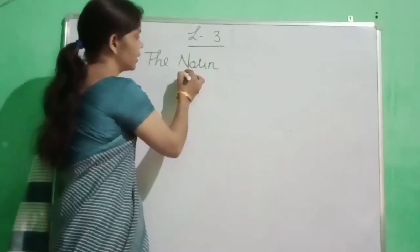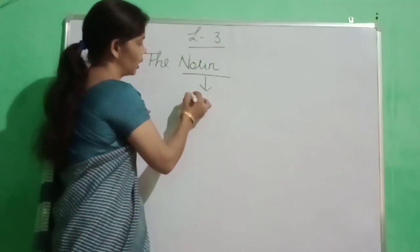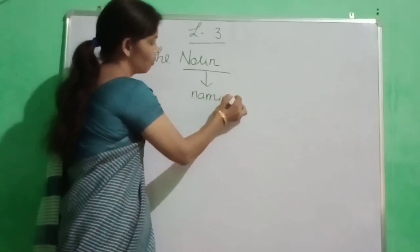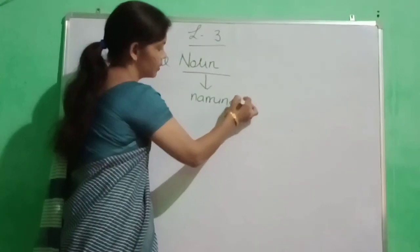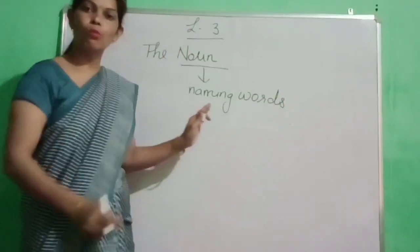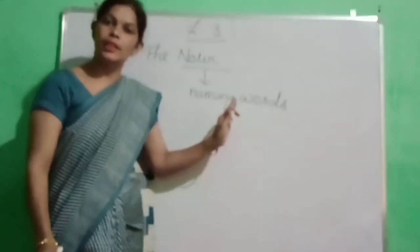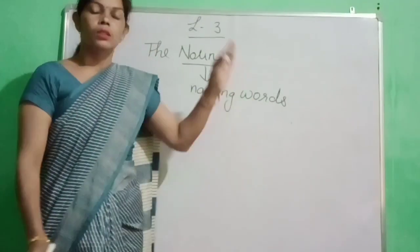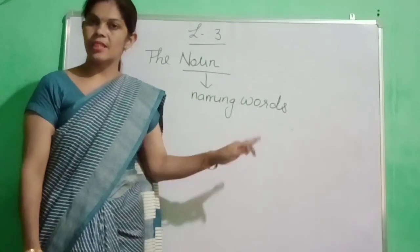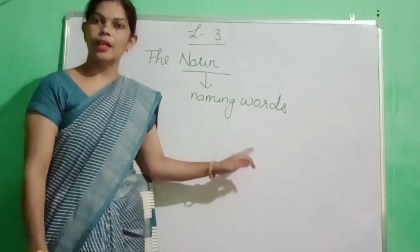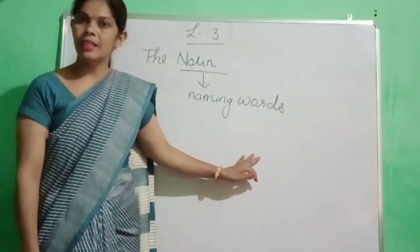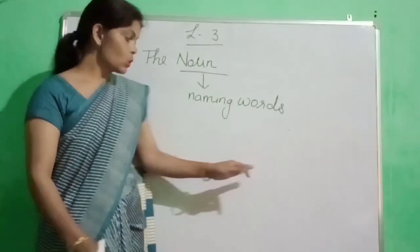Noun kya hota hai, dear students? Noun hote hain naming words. Kya hote hain noun? Naming words. Koi bhi chahe woh thing ho, chahe woh place ho, person ho, animal ho — kisi ka kya hota hai? Name hota hai na? Yes, na?